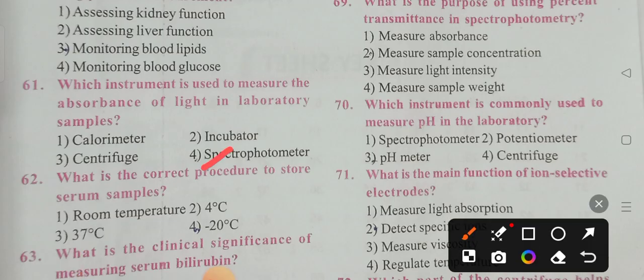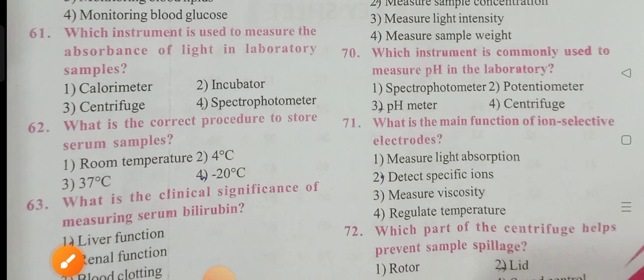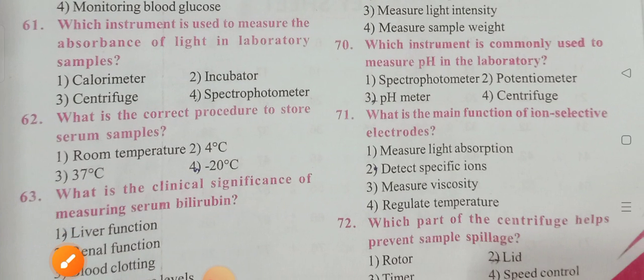Question 62: What is the correct procedure to store serum samples? Options: 4 degrees, minus 20 degrees, 37 degrees centigrade. Option 4 is the correct answer — minus 20 degrees centigrade for long-term storage.